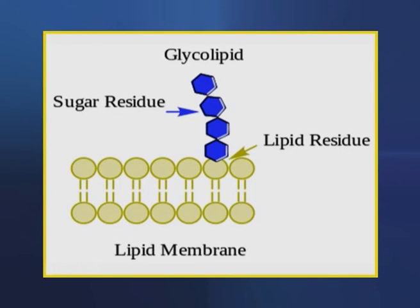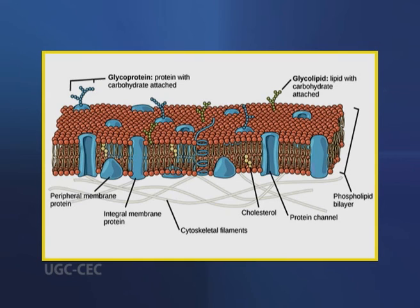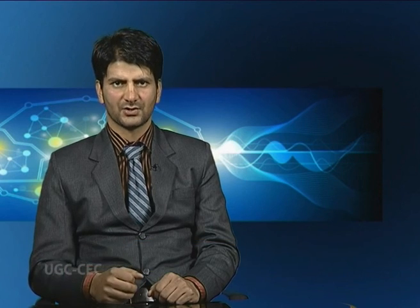Now let's talk about glycolipids and lipopolysaccharides. These are lipids that are covalently bound to oligosaccharides. Lipids and proteins on the cell membrane surface often have short carbohydrate chains protruding out from the cell surface, known as glycolipids and glycoproteins. They form hydrogen bonds with the water molecules surrounding the cell and thus help to stabilize membrane structure. Gangliosides are membrane lipids of eukaryotic cells in which the polar head group is a complex oligosaccharide containing sialic acid and other monosaccharide residues.